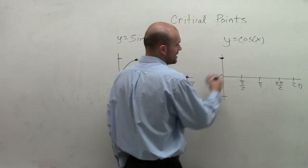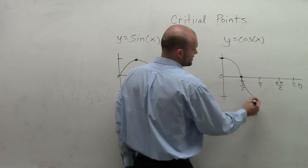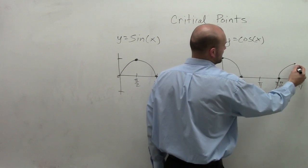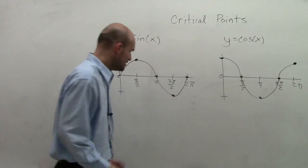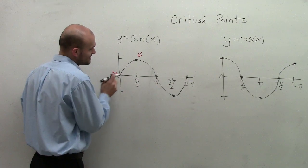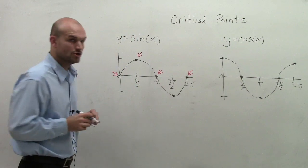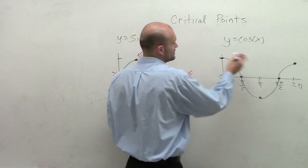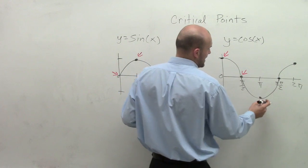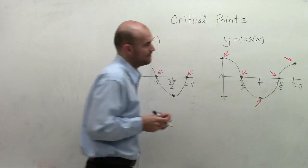The cosine graph is going to start at 1, my max point, goes down to 0, then down to its minimum, up to its intercept, and then back up to its maximum point again. When dealing with the sine graph's critical points, we have a maximum here, x-intercepts at 0, π, and 2π. For the cosine graph, we have a maximum at 0, an x-intercept at π/2, a minimum at π, an x-intercept at 3π/2, and then the maximum value at 2π.